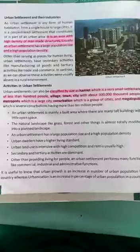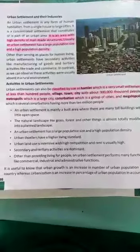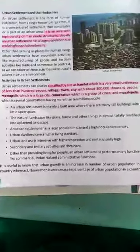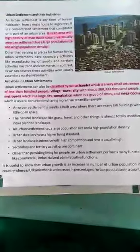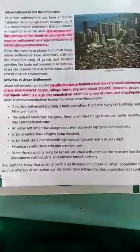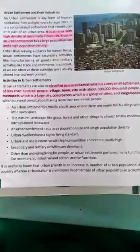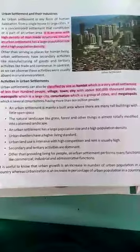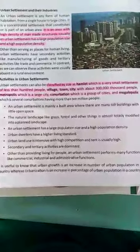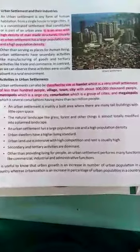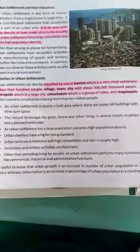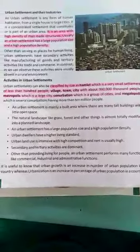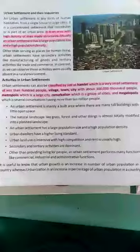There is some vocabulary shared on page number 98. First of all, hamlet — a hamlet is a very small settlement. Next, metropolis is a large city. Conurbation is a group of cities. Megalopolis is several conurbations having more than 10 million people.